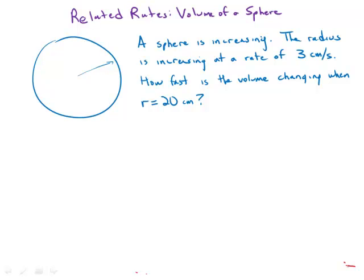The radius is increasing at a rate of 3 centimeters per second. So right there we're given a dr/dt. How fast is the volume changing when r equals 20 centimeters?